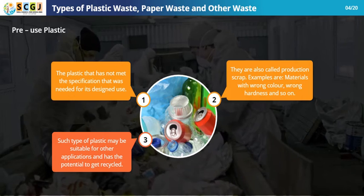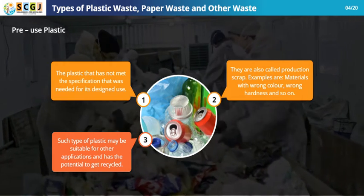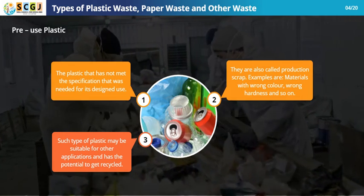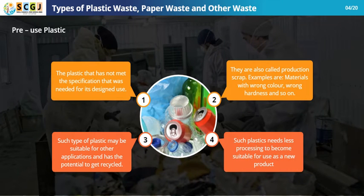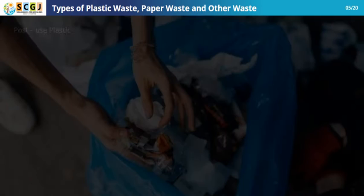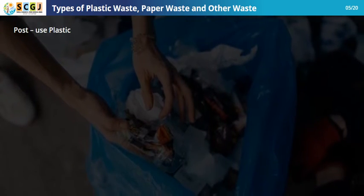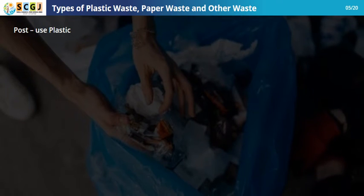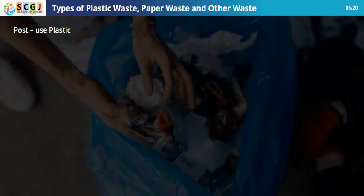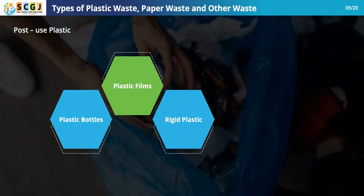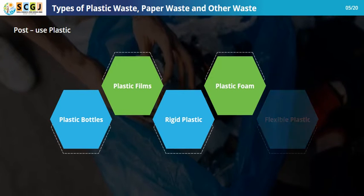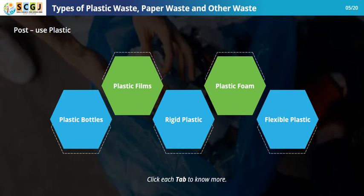Examples of pre-use plastic include materials with wrong color, wrong hardness, and so on. Such plastics may be suitable for other applications and have the potential to be recycled, requiring less processing to become suitable for use as a new product. Post-use plastic waste suitable for recycling falls under five categories: plastic bottles, plastic films, rigid plastics, plastic foams, and flexible plastics.